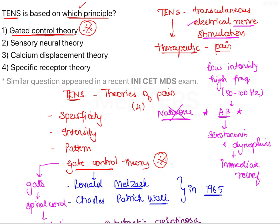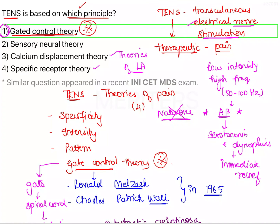Getting back to the question: TENS is based on theories of pain, and the right answer is Gate Control Theory. The other options — Sensory Neural Theory, Calcium Displacement Theory, and Specific Receptor Theory — are incorrect. Calcium Displacement Theory and Specific Receptor Theory are actually theories of local anesthesia, not pain. Therefore, TENS is based on the most important theory of pain, which is the Gate Control Theory, making option one the correct answer.